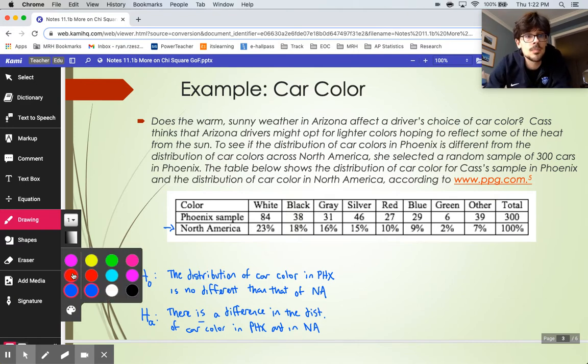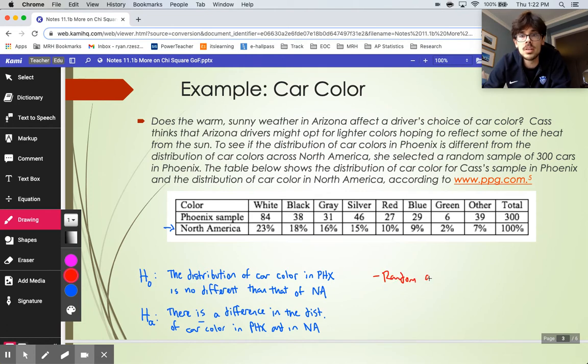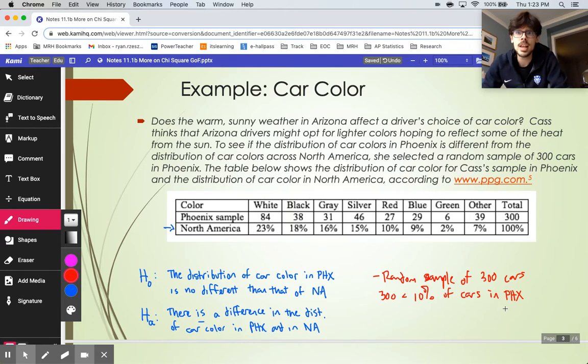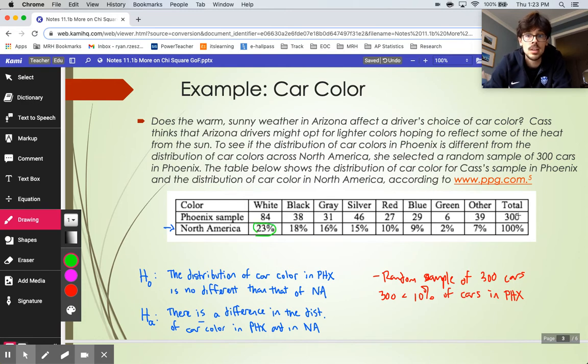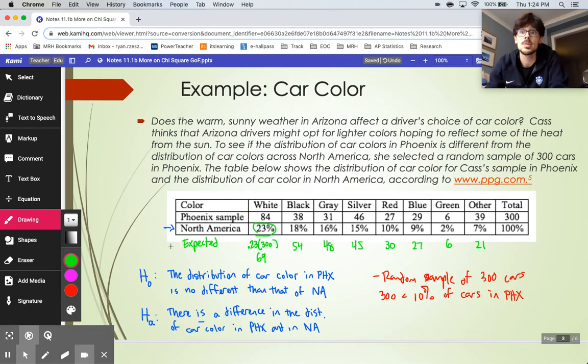Next up, we're going to check our conditions. It's a random sample of 300 cars. 300 is less than 10% of cars - would that be cars in Phoenix or cars in North America that we'd be looking at? The answer is in Phoenix because that is where we pulled our sample from. And the last condition is that expected counts. Before we can verify this, we actually need to calculate our expected counts. They give us percentages here. We would need to take each of these percentages times 300 to figure out how many we would expect to see in our sample.